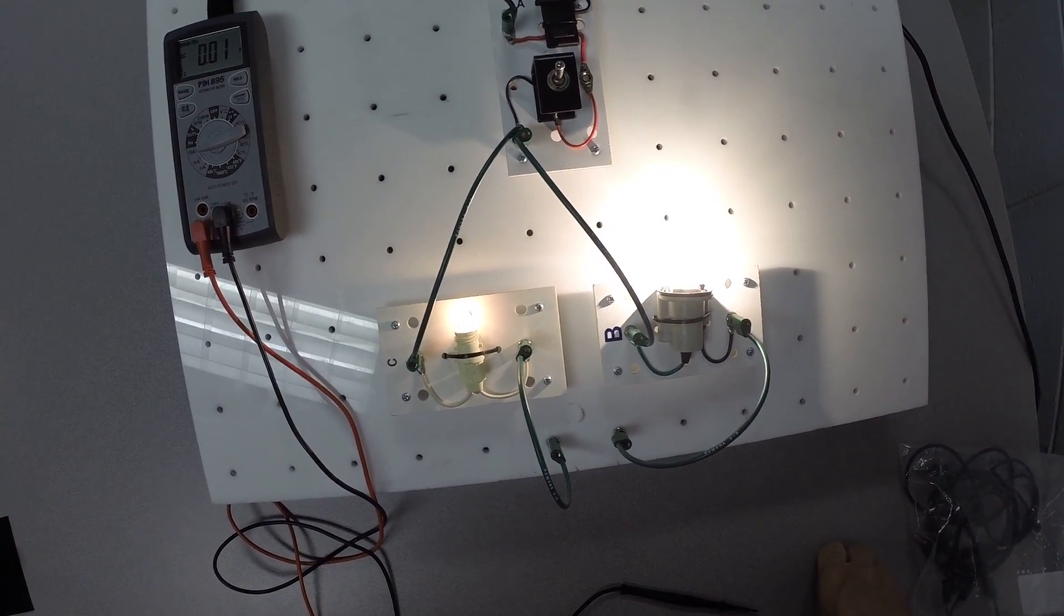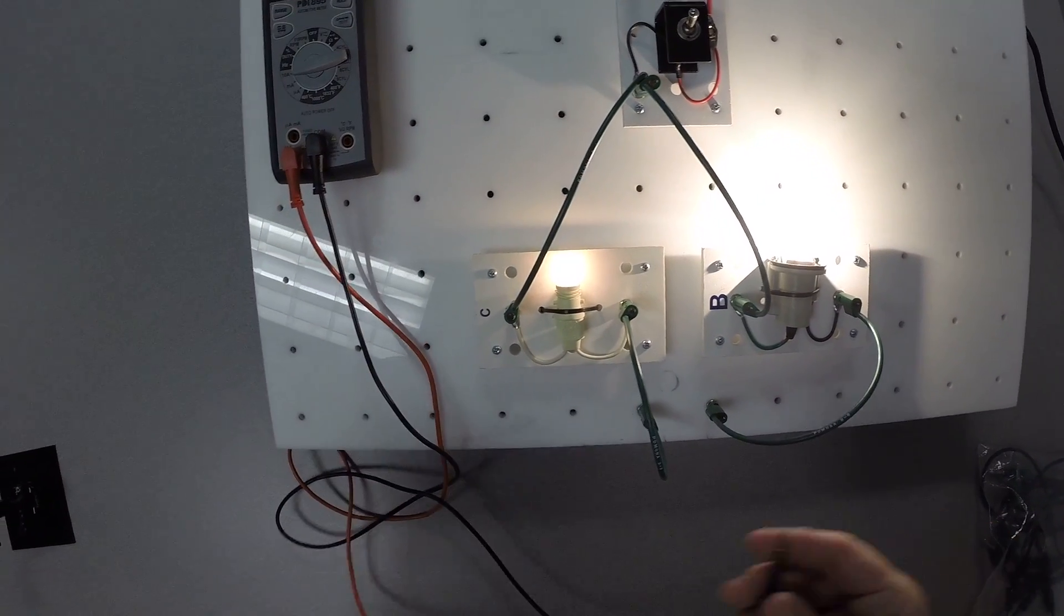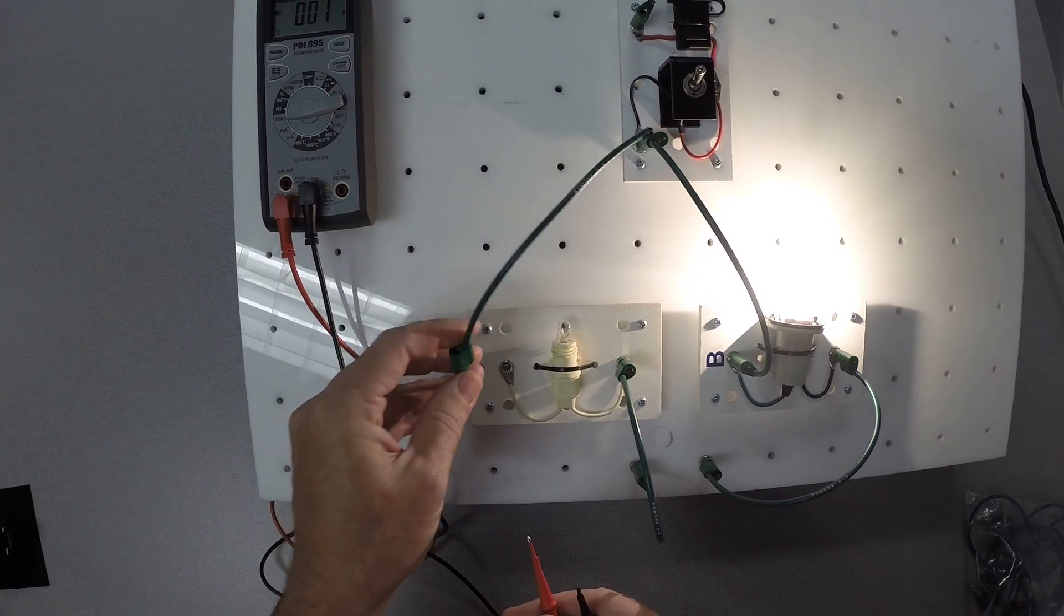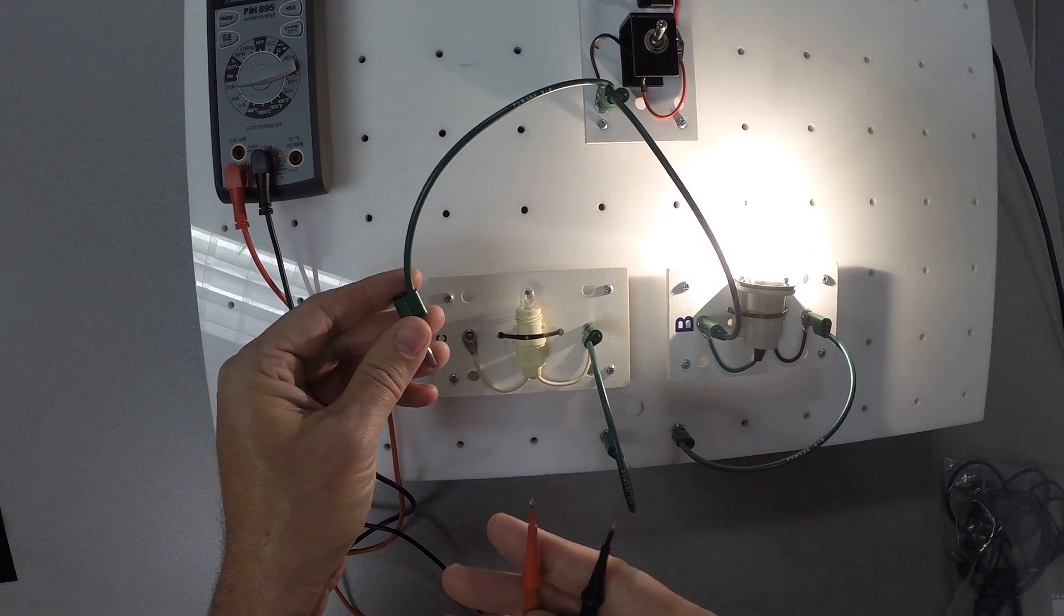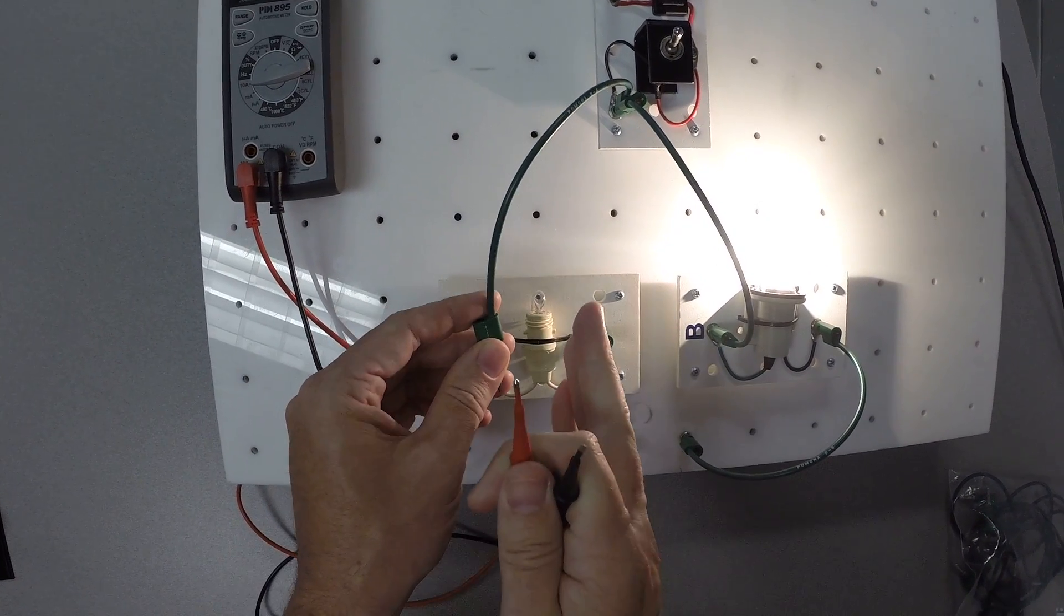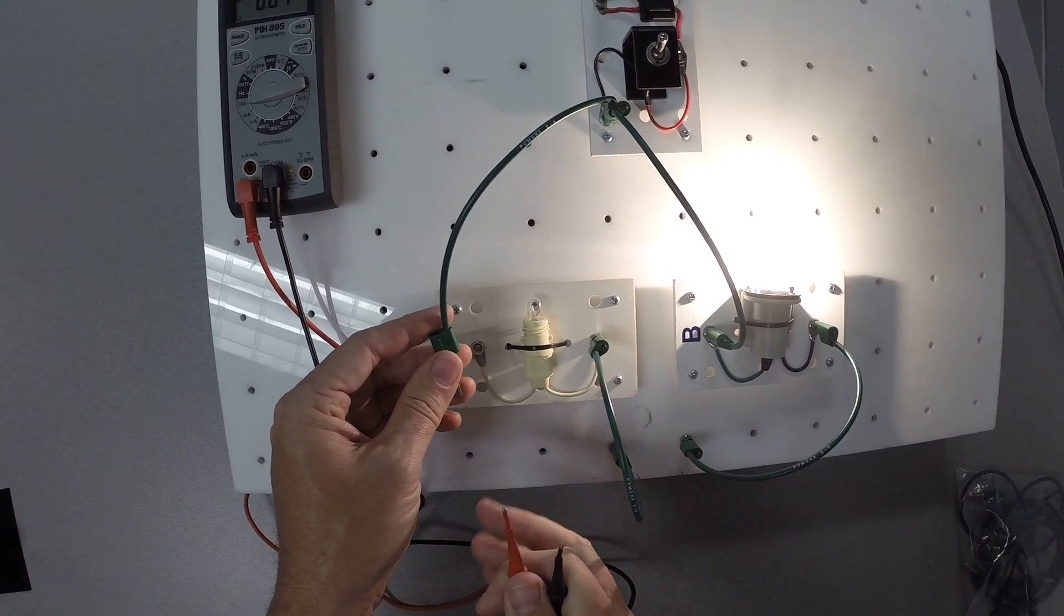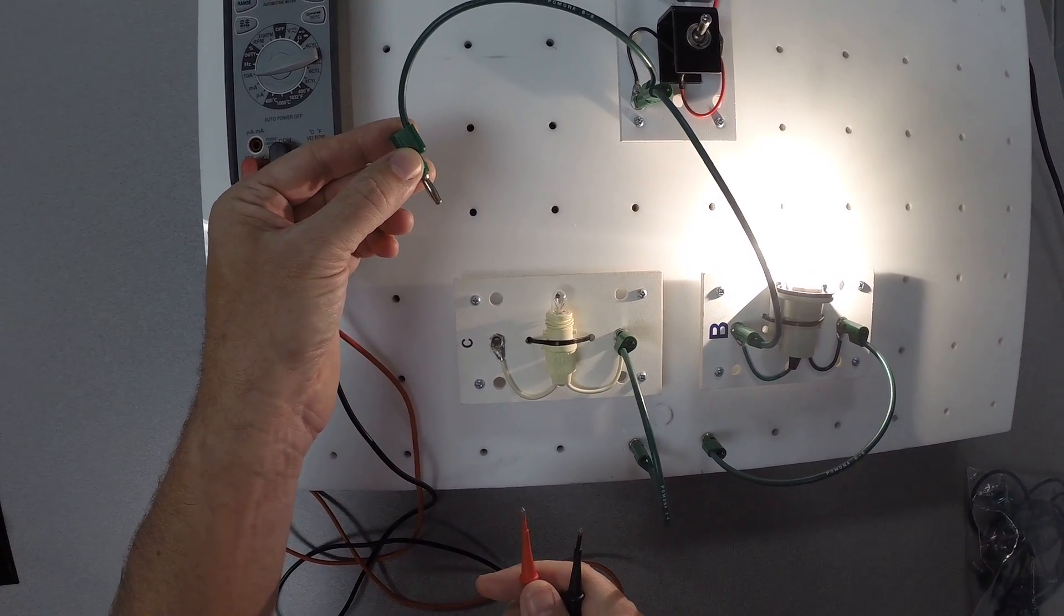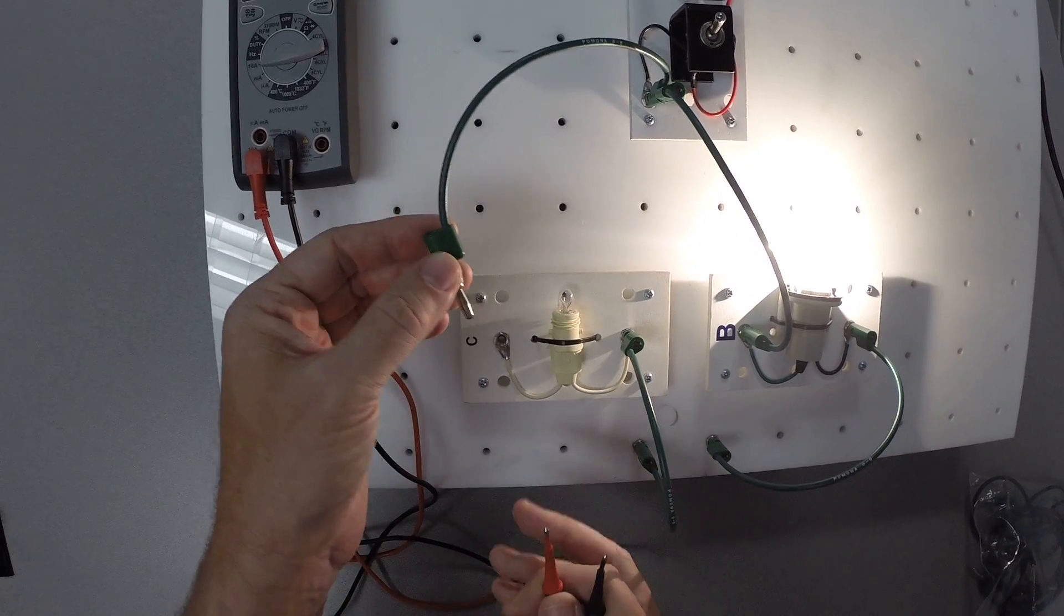But anyway, let's look at the current flowing through the small bulb, the branch of the circuit for the small bulb. So we're going to hook the meter up in series. We're hooking the meter up in series with this leg of our parallel circuit. That means we have to actually disconnect part of this branch of the circuit.